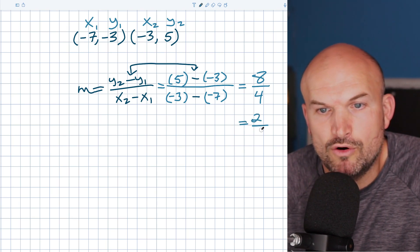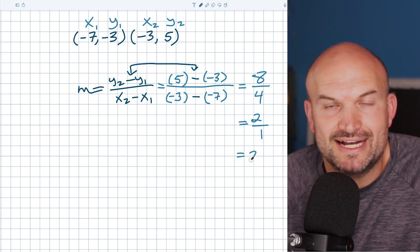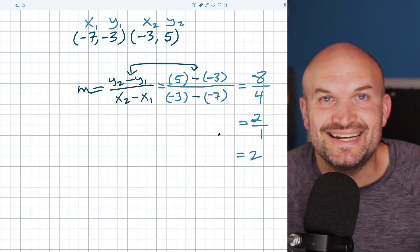And then eight divided by four is going to equal—you could see this as two over one, or you could just write it as two and there we go. That's it. I'll look forward to seeing you in the next video.